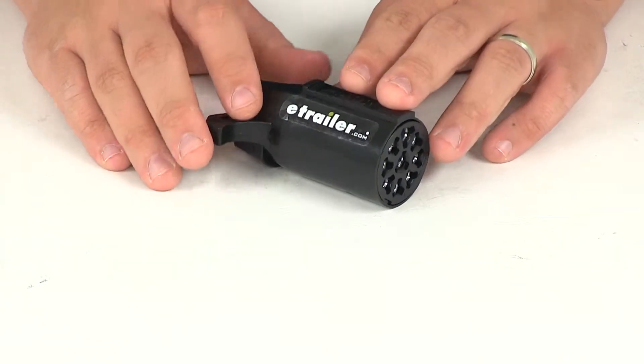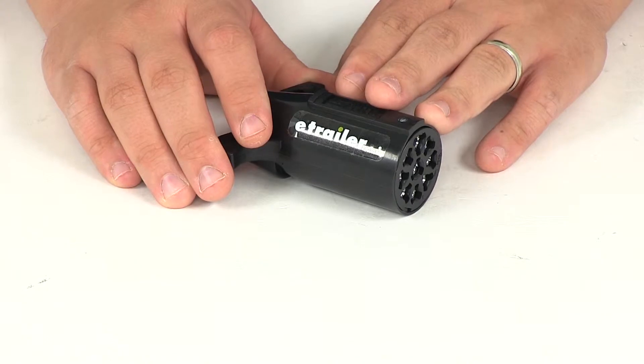Today we'll be reviewing part number PK 12906. This is the Pollock 9-pole round pin trailer connector.